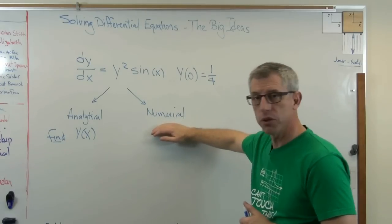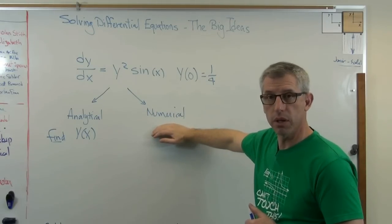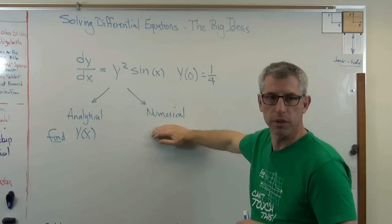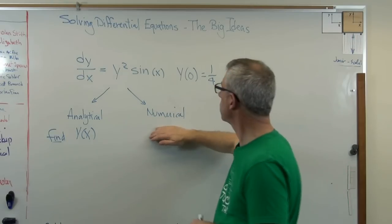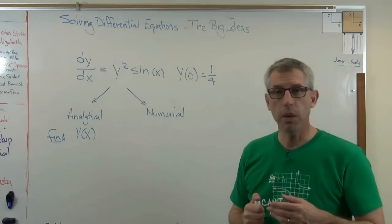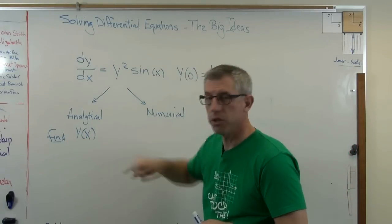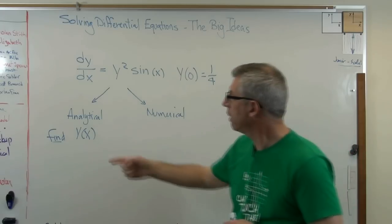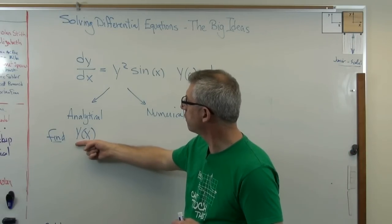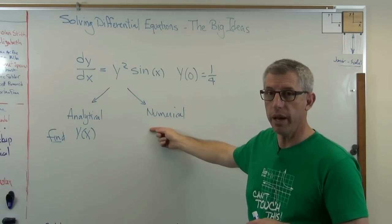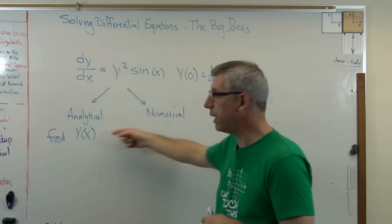When you're doing a numerical solution, what you're doing is you're executing a computer algorithm, usually on a computer. I guess maybe in class or something you might do it by hand, but almost always on a computer. And what you're coming up with is a list of points. If you plot those points, you get a picture of whatever y of x is. This is a solution, a function you can substitute in. This is not. This is not a closed-form solution. It's a picture of the solution.